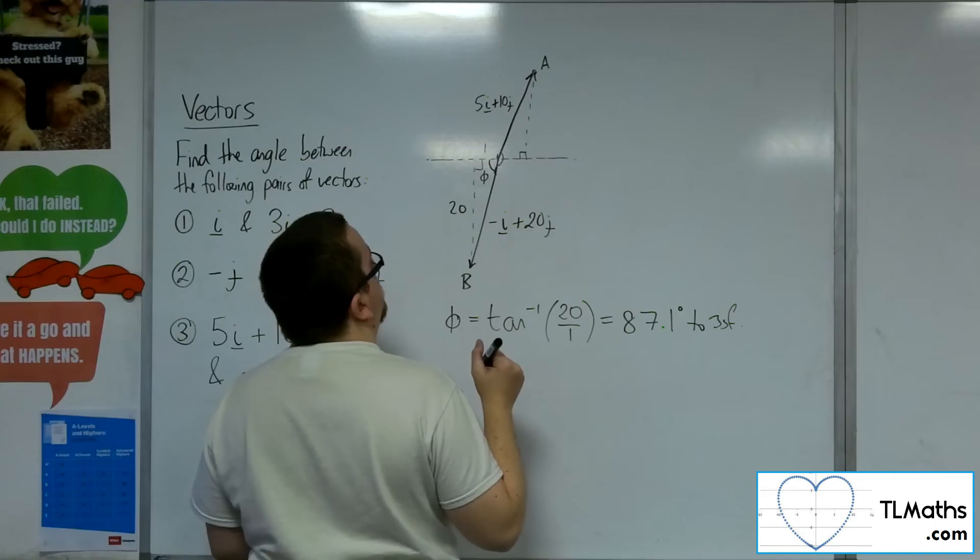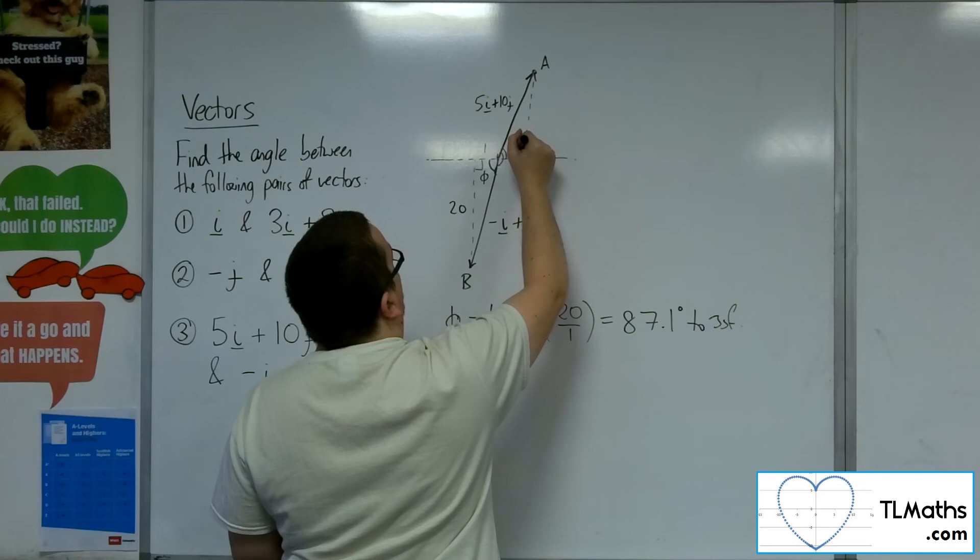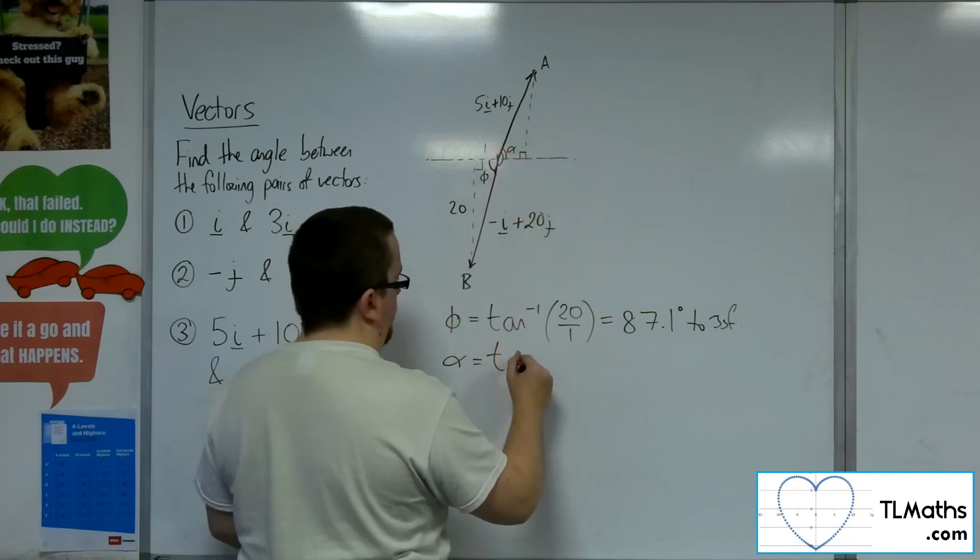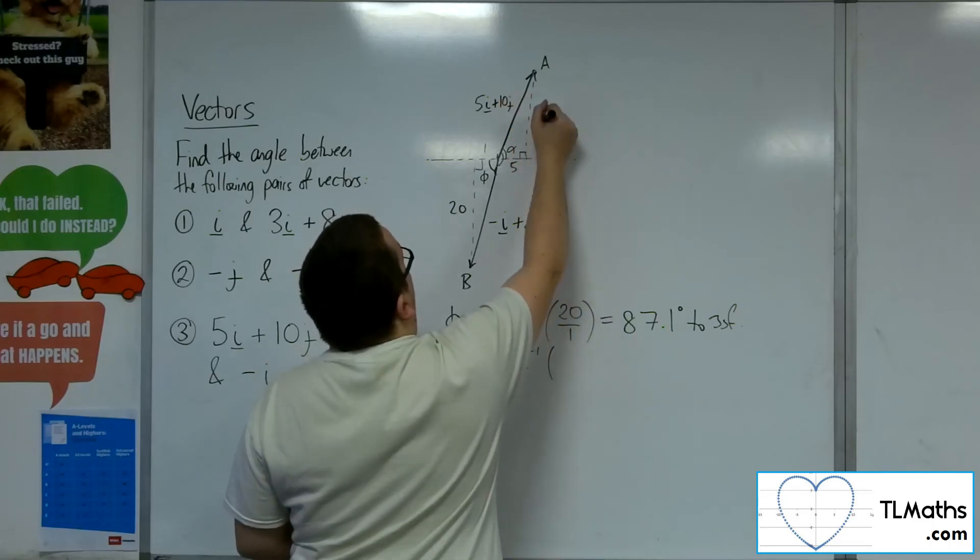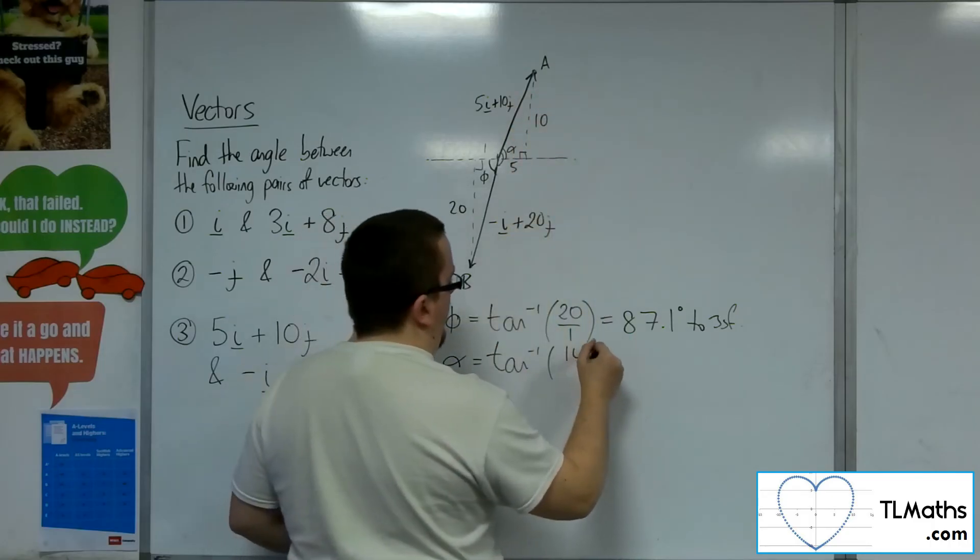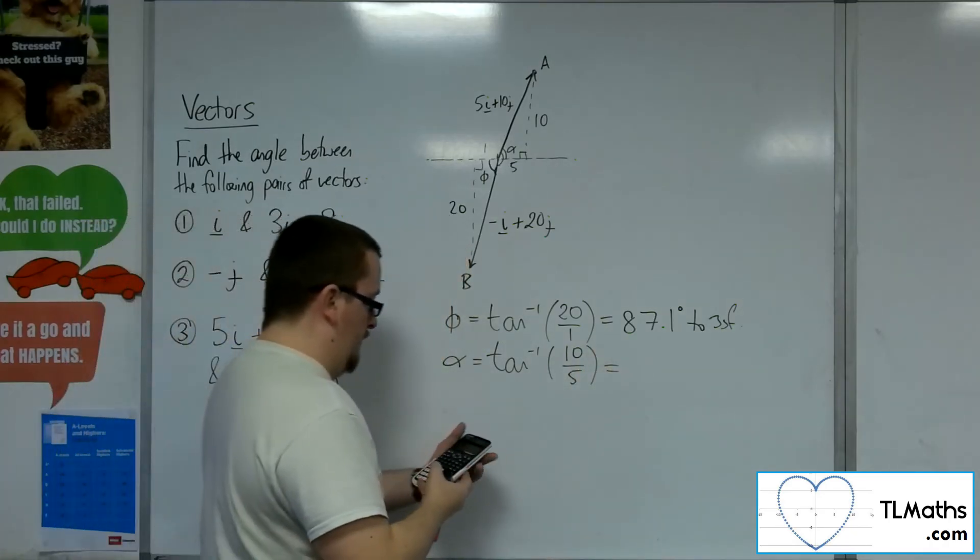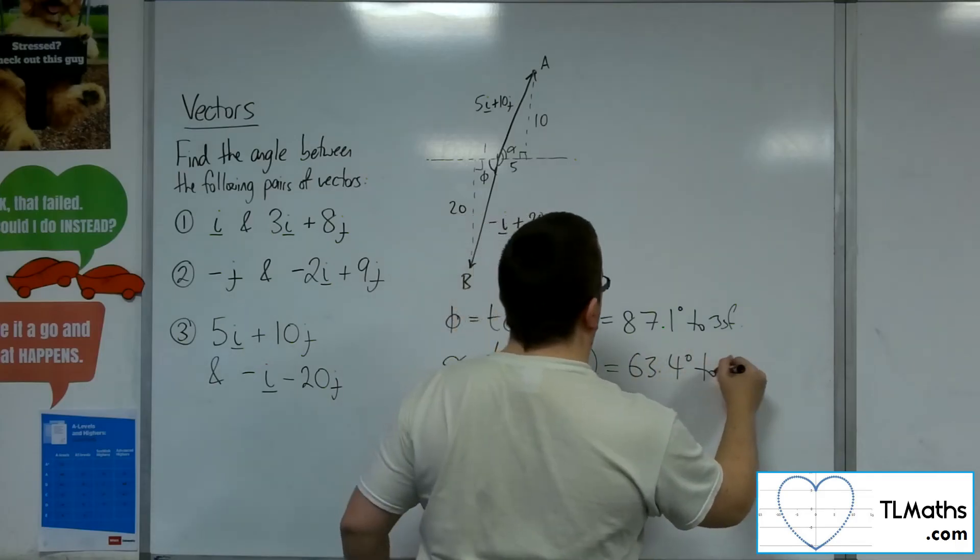And I could also drop that perpendicular there. So that I could work out this angle. So let's call that alpha. The base is 5, that's 10. So we've got 10 over 5. So inverse tan of 2 is 63.4 degrees to 3 sig fig.